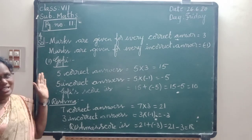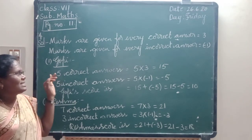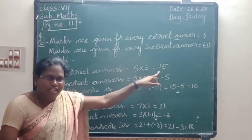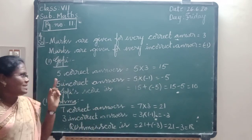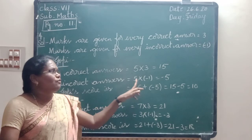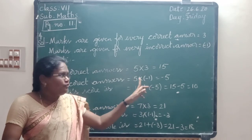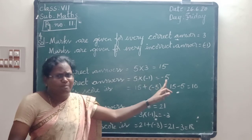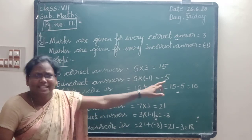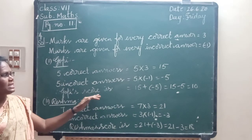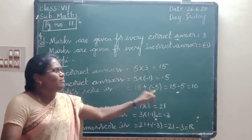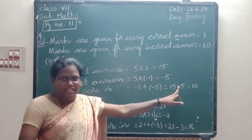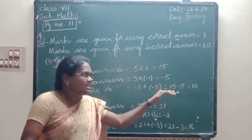Once again, listen to Gopi's score. Gopi attempted 5 correct answers. 5 correct answers score is 5 into 3, which equals 15. He attempted 5 incorrect answers. 5 into minus 1 equals minus 5 — the product of a positive and negative integer is a negative integer. Gopi's score is 15 plus minus 5, which is 15 minus 5, equal to 10.